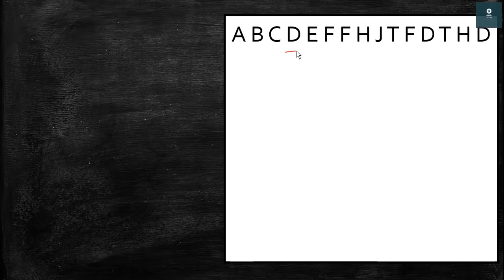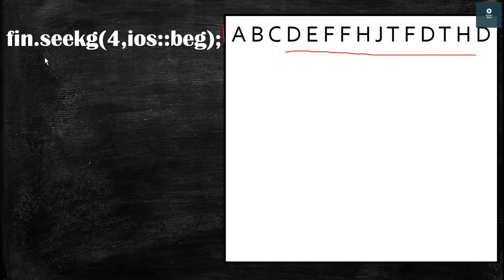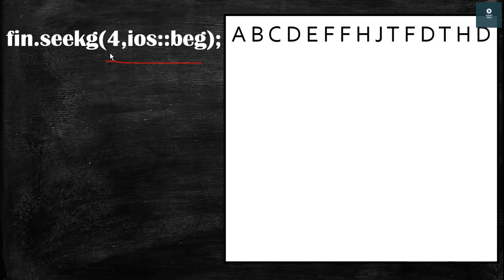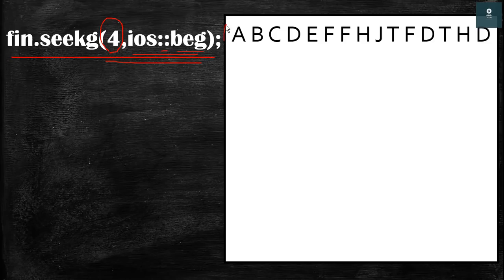For example, suppose we have a file with data. Initially the get pointer is at the zeroth location. To move the get pointer four locations after the beginning, we write the file object — fin in this case — then dot, then seekg, then 4 inside the brackets, a comma, and then ios::beg as the reference point. After execution, the file pointer moves four locations from the beginning.